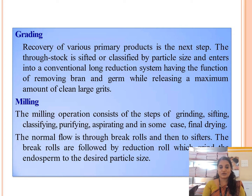The next step is grading and recovery of various primary products. The stock is sifted and classified by particle size and enters into a conventional long-direction system, which has the function of removing bran and germ while releasing a maximum amount of clean large endosperm. The grading process also removes any remaining bran and germ still present in the corn kernels.